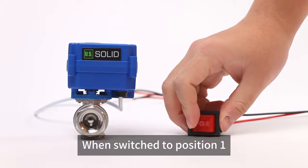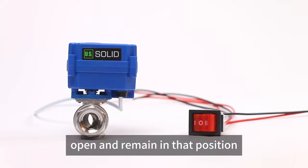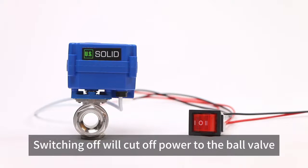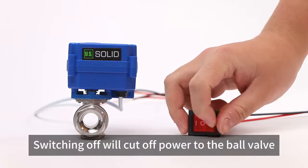When switched to position 1, the ball valve will open and remain in that position. Switching off will cut off power to the ball valve.